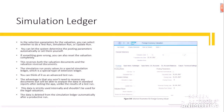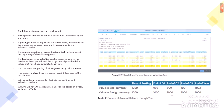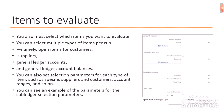You must also select which items you want to evaluate. You can select multiple types of items per run: open items for customers, open items for suppliers, general ledger accounts, and general ledger account balances. You can also set parameters for each type of item such as specific suppliers and customers, account ranges, and so on. You can see an example of parameters for the subledger selection parameters.